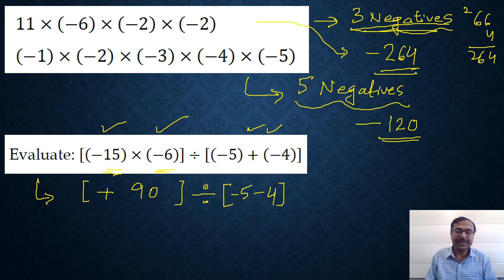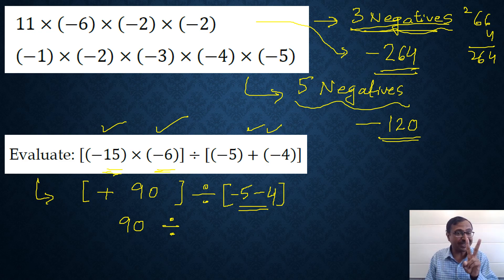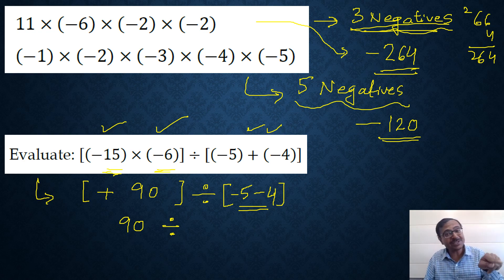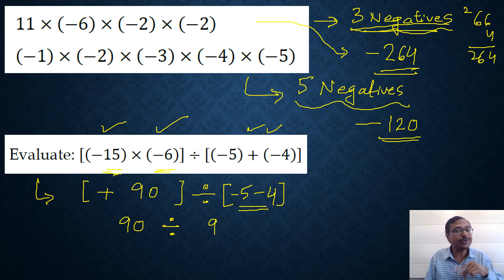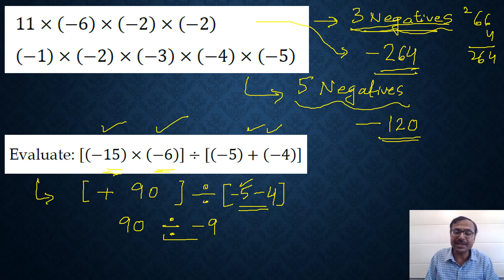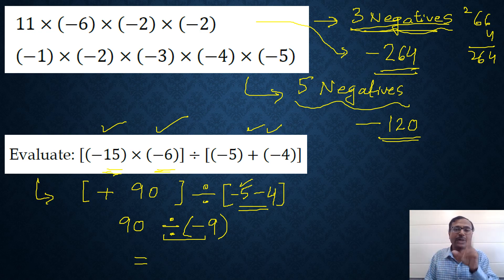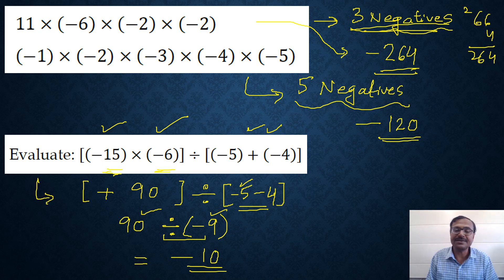Plus and minus together becomes minus 4. For the second bracket, minus 5 minus 4: since both signs are the same, we add — 5+4=9 — and the larger integer is negative, so the bracket gives minus 9. Now we divide 90 by minus 9: only one negative sign, which is odd, so the answer is negative. 90÷9=10, therefore the final answer is minus 10.